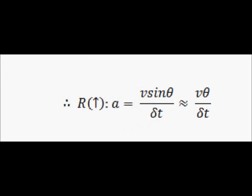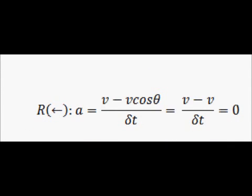All we're going to do is substitute these angle approximations into the resolved vertical and horizontal accelerations. For the horizontal acceleration, a equals V sin theta over delta t. Since sine theta equals theta for small angles, that's approximately equal to V theta over delta t. For the vertical acceleration, a equals V minus V cos theta over delta t. Since cos theta equals 1, that goes to V minus V over delta t, and V minus V is 0. So the horizontal acceleration in this case is actually 0, and we can ignore it.